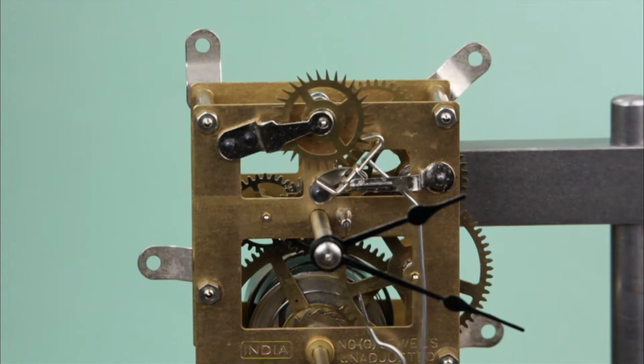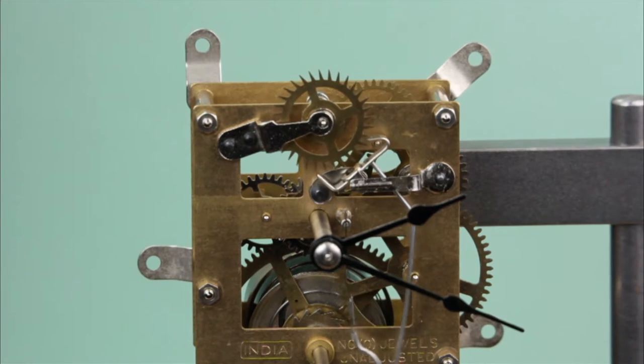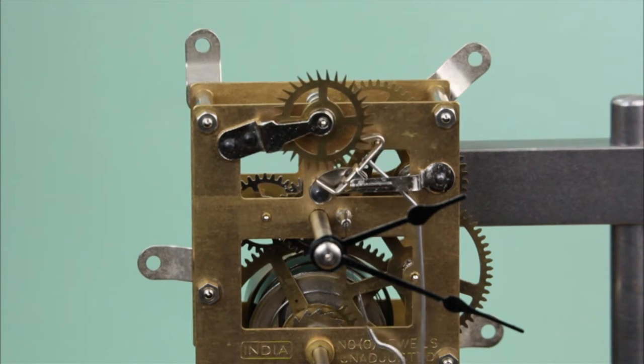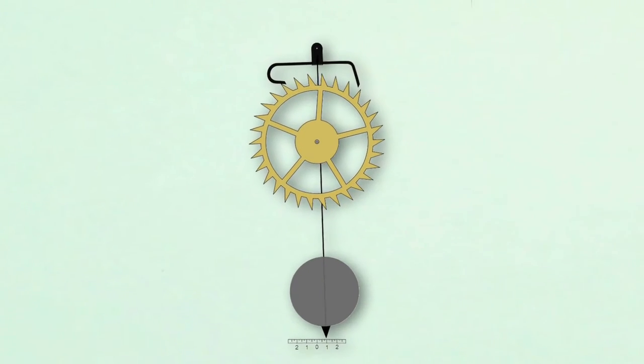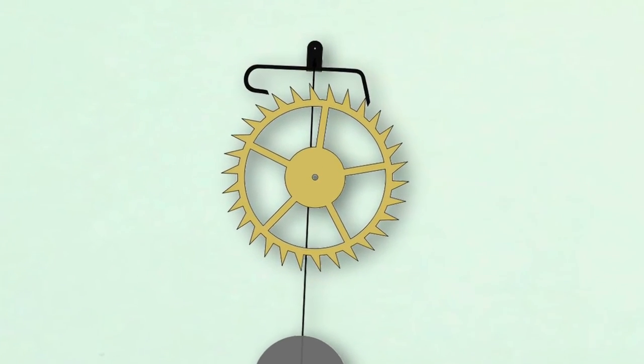Notice how the escape wheel moves forward and then momentarily reverses direction before moving forward again. This momentary reversal is the recoil. Now let's slow things down so we can see exactly what's happening.